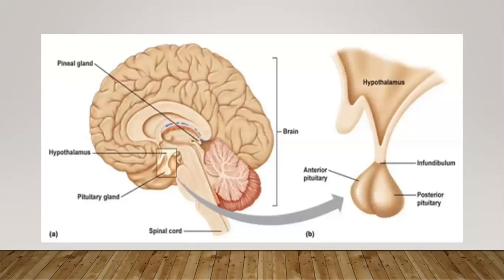If you take a surgical section, this is what you would see: you go to the hypothalamus, then the stalk, then the anterior pituitary and the posterior pituitary.